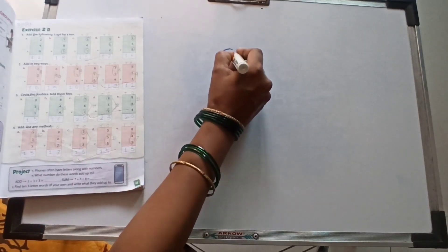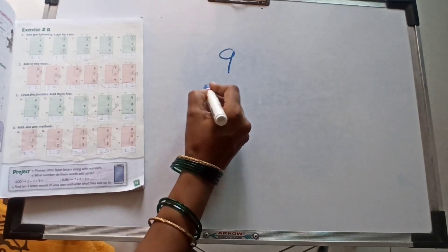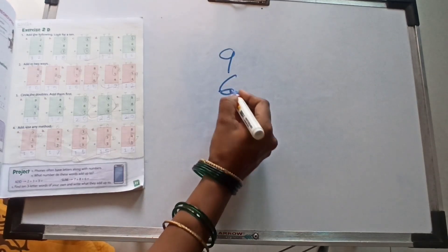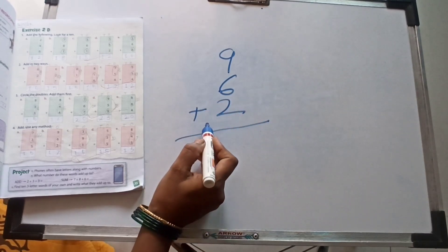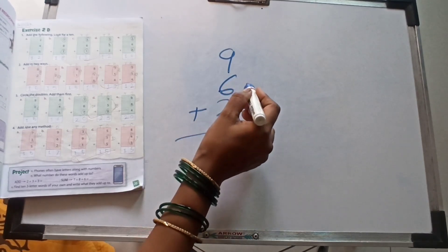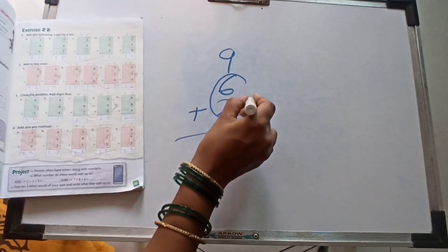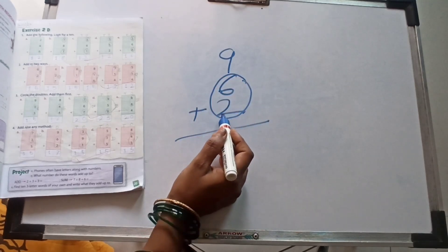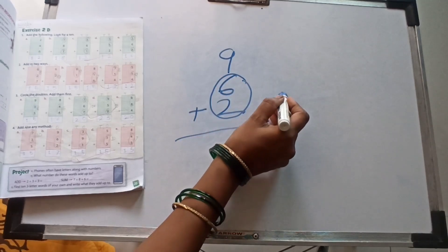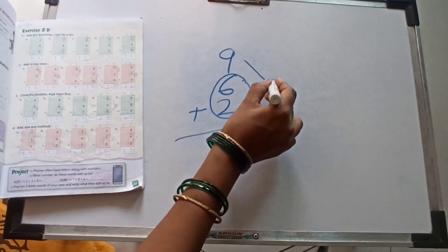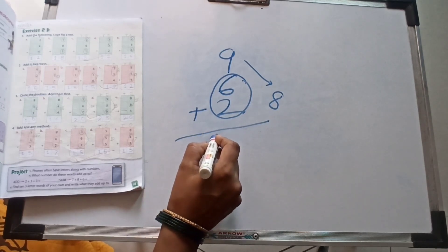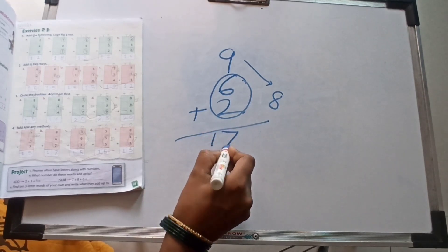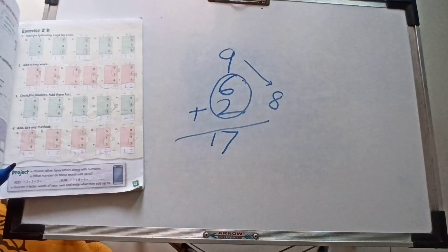Next one: 9 plus 6 plus 2. This time we add this one, second one, third one number. 6, 7, 8. 8 and plus this one, 9. How many? 17. Very good.